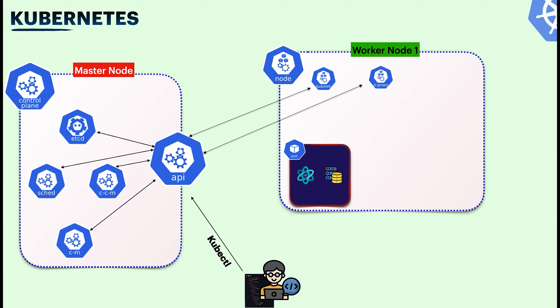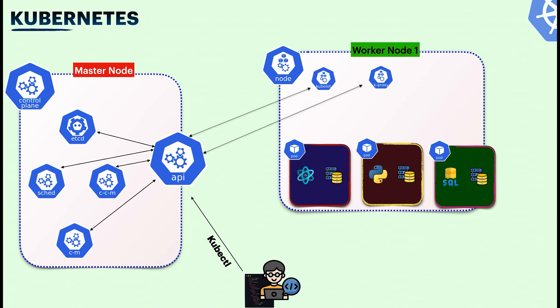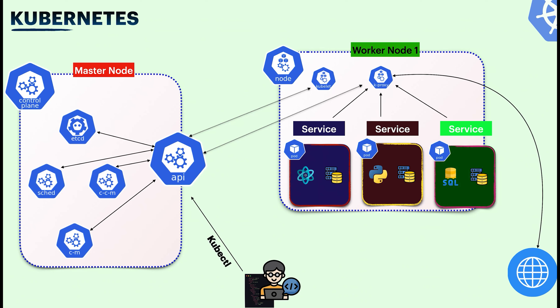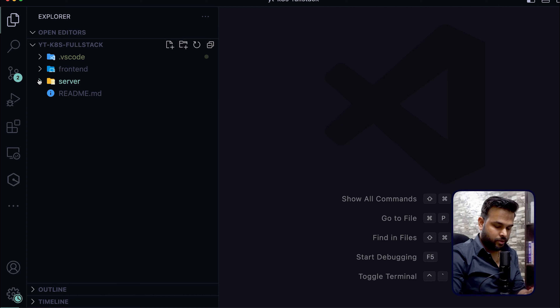In our example we are working with a React application and a Node.js application — we will put both of them inside a single pod. If you're running this on your local machine you'll have only one control plane and one worker node, but if you move this architecture to cloud you can have multiple worker nodes with multiple pods running inside one worker node. Every pod will have a service, and this service handles inter-communication between different pods inside the node. All the services report to kube-proxy, and kube-proxy makes them available to the outside world — outside traffic hits kube-proxy, which then transfers requests to different pods based on availability.